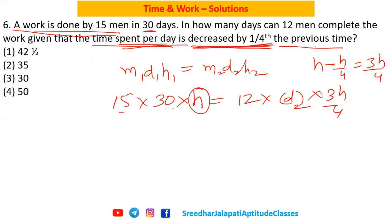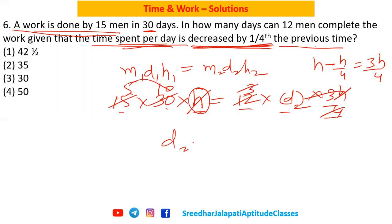On applying m1 × d1 × h1 = m2 × d2 × h2 and simplifying, h cancels from both sides. After further simplification — 15 × 30 × h = 12 × d2 × (3h/4) — the factors reduce, giving 10 × 5 = 50. So they take 50 days to complete the task. That is option 4.